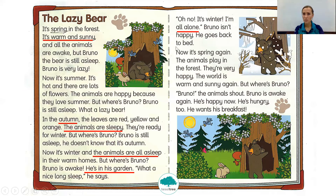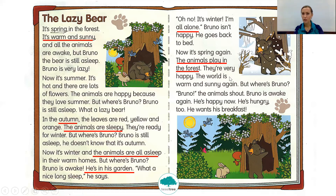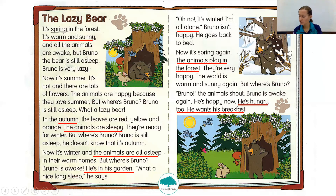Bruno isn't happy. He goes back to bed. Now it's spring again. The animals play in the forest. They are very happy. The world is warm and sunny again. But where is Bruno? The animals shout 'Bruno!' Bruno is awake again. He is happy now. He is hungry too — he wants his breakfast. That was one of the sentences in section four, so now we've underlined all these parts of the story.